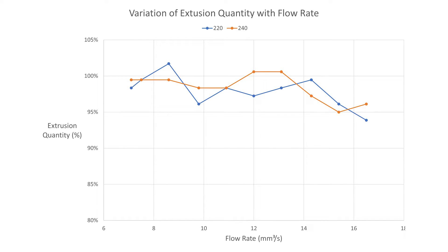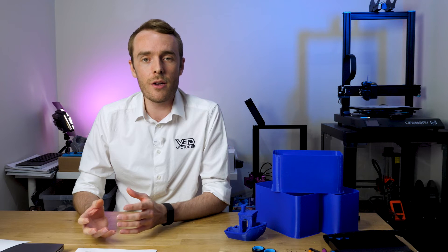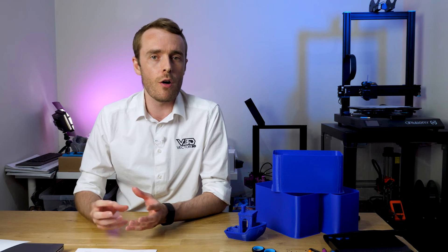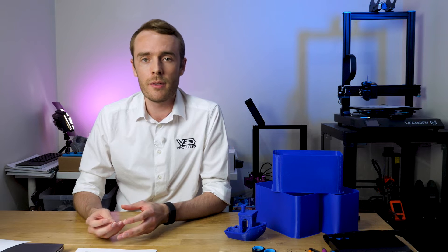Looking at only the 220 and 240 tests, we are going to see fluctuations across the full range, with a trend towards lower relative extrusion quantity as flow rate increases. I suspect there may also be some interference from the PID control system being a little bit off from the temperature that it needs to be. Perhaps this is something we could test in a future video.